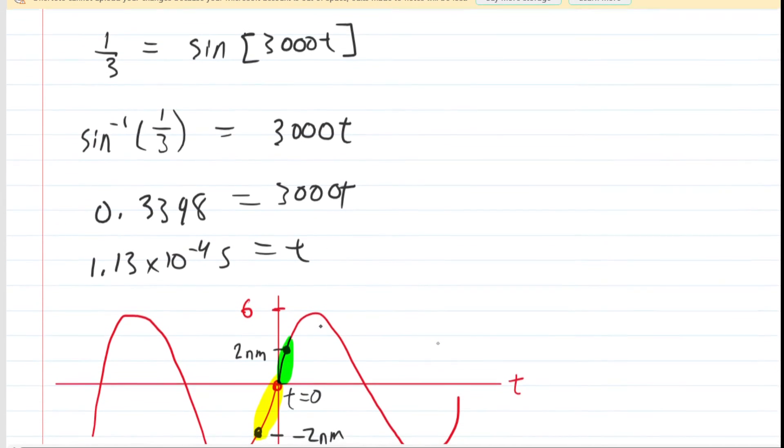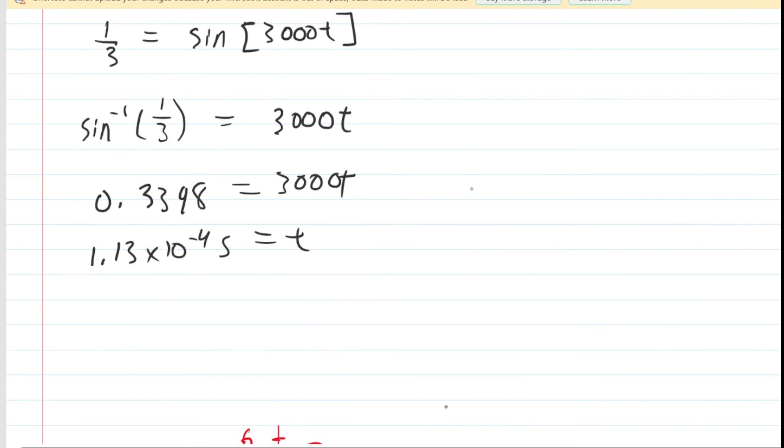And perhaps we can convert that into milliseconds by multiplying by 1000. It's just a little bit easier of a number to work with. So just multiply your answer by 1000, since there's 1000 milliseconds in one second, and you would end up with approximately 0.113 milliseconds.